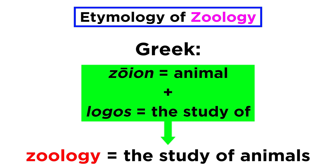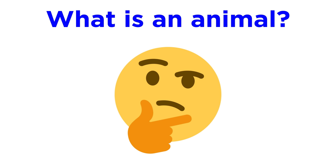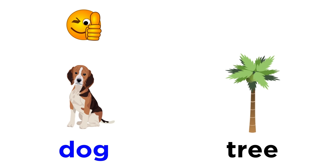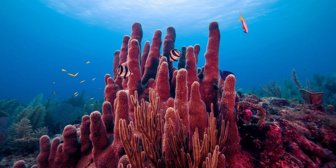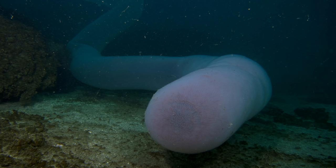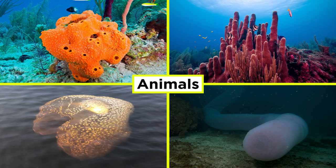Pretty straightforward, right? But then again, what is an animal, exactly? You'd think it would be obvious, and of course it usually is. For example, a dog is clearly an animal, and a palm tree is clearly not. But what about a sponge? A sponge doesn't really look like an animal. From a distance, corals kind of look like rocks. Bryozoans look like blobs. And giant pyrosomes, or colonies of free-floating tunicate clones, look otherworldly. And yet, all these things are animals.